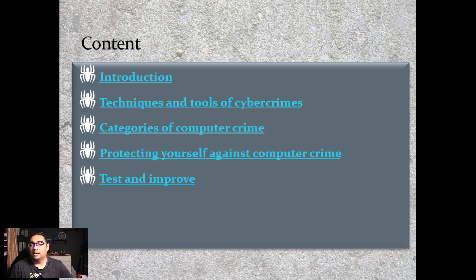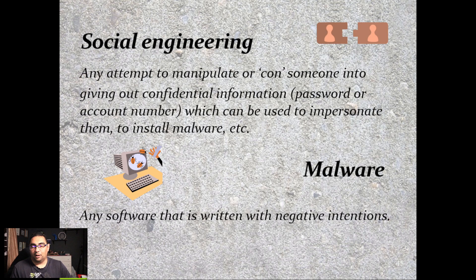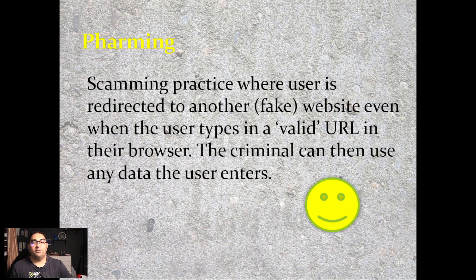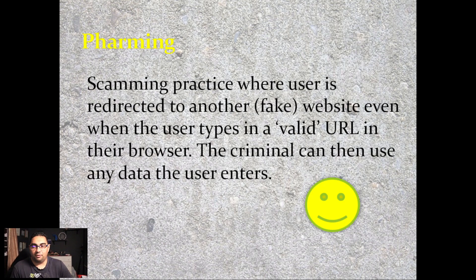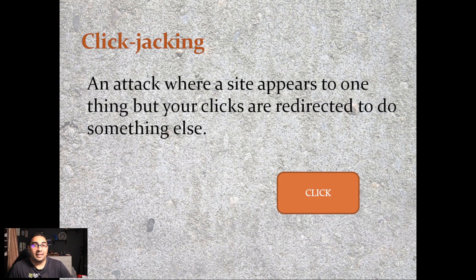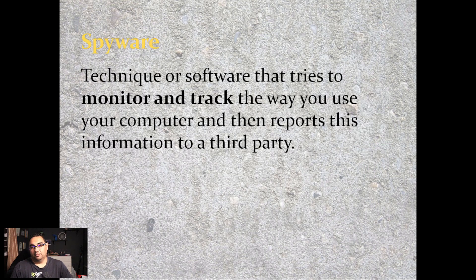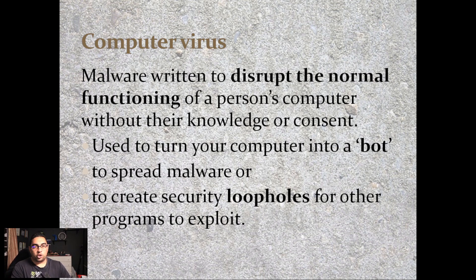Section 2.2 deals with the dangers of computer crime. The term social engineering is very important, and so is malware. Know your techniques: what is phishing, what is pharming, and the difference between the two — though the two can work together. Clickjacking is where you click something that appears to take you to one thing but takes you somewhere else. Spoofing is the forgery of an email header. Spyware works in the background monitoring and tracking you, and a keylogger records all your keystrokes.